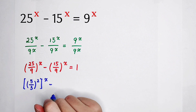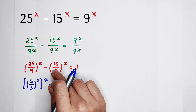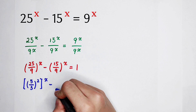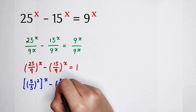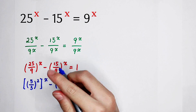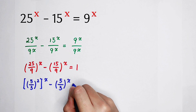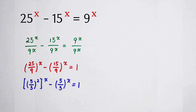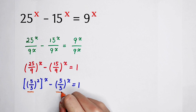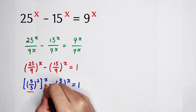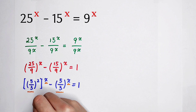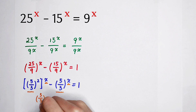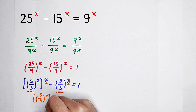Minus — 15 divided by 9: they have a common factor of 3. So 15 divided by 3 is 5, and 9 divided by 3 is 3. So now you can see (5 over 3) to the power of x, times (5 over 3) to the power of x — which can be written as (5 over 3) all to the power of x, all squared.